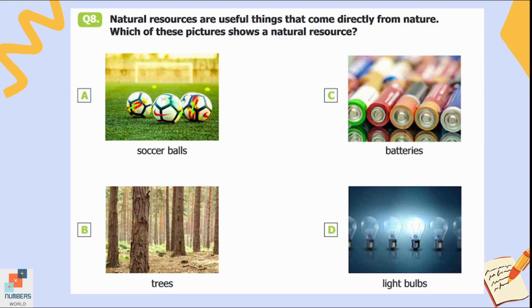Question number eight: Natural resources are useful things that come directly from nature. Which of these pictures shows a natural resource? Option A is soccer balls, B is trees, C is batteries, and D is light bulbs. The examples of natural resources are like trees, oil, and water. So here, trees are the natural resources, and option B is the correct answer.